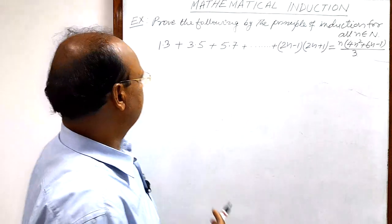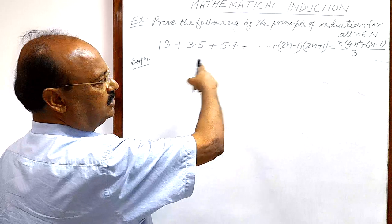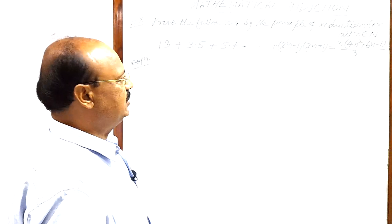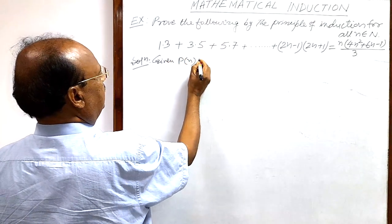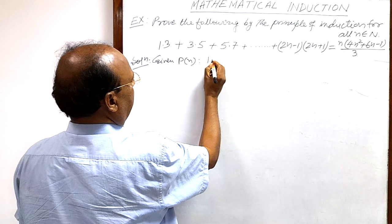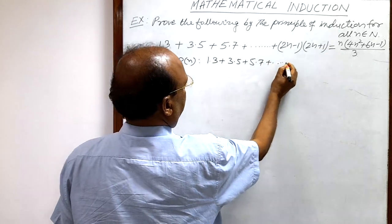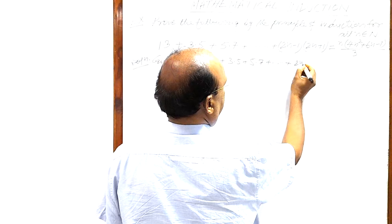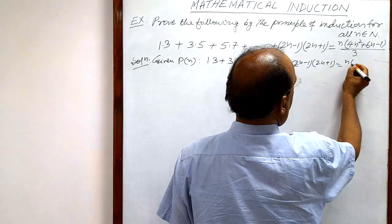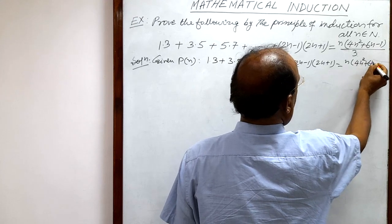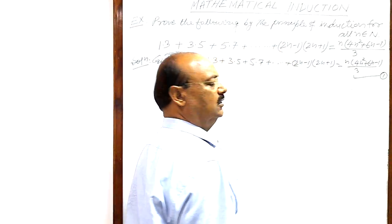This is known as the mathematical statement, denoted by P(n). So P(n) means: 1×3 + 3×5 + 5×7 + ... up to the nth term, that is (2n−1)(2n+1), is equal to n(4n² + 6n − 1) / 3. Let us call this relation number 1.